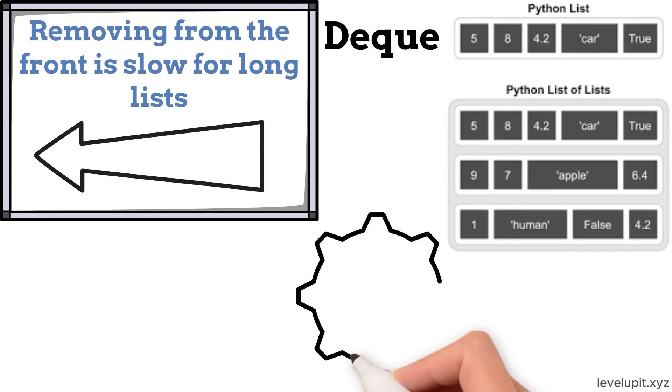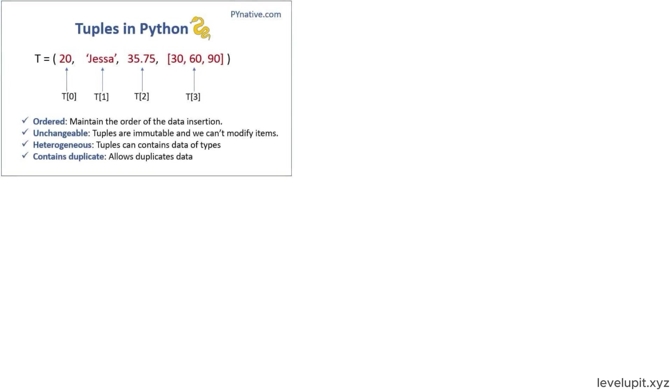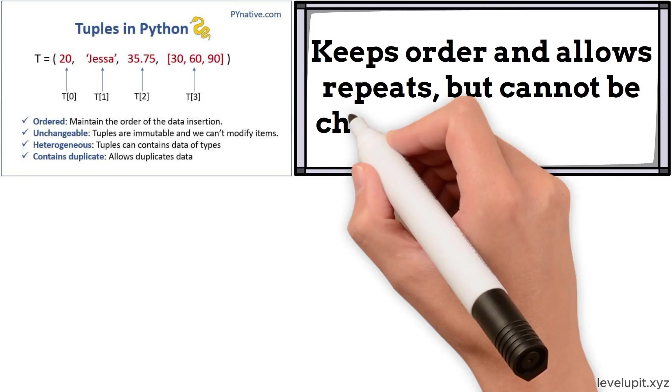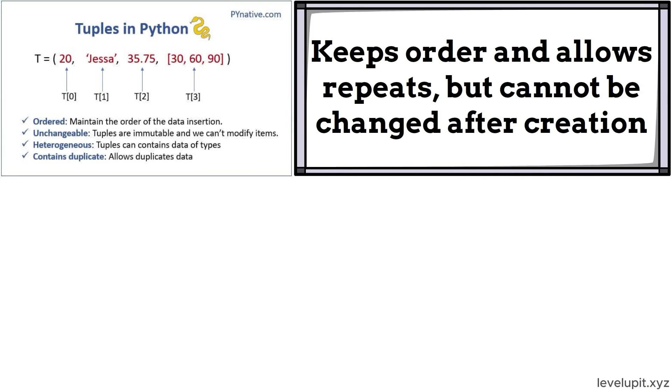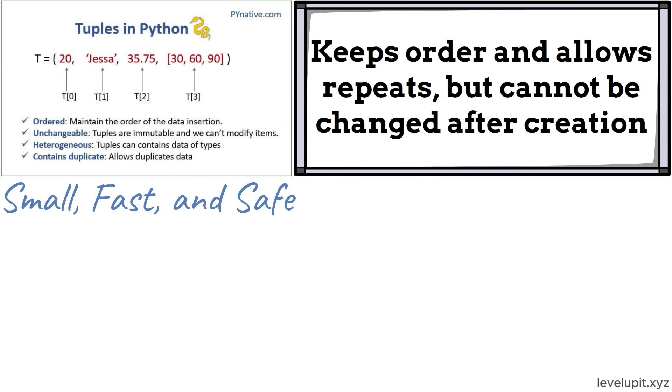For most ordered collections that grow at the end and change sometimes, lists keep code clear and fast. Tuples look similar but behave differently. A tuple keeps order and allows repeats, but cannot be changed after creation. That one rule is powerful. It makes tuples small, fast, and safe to share across functions.